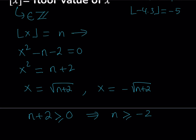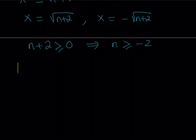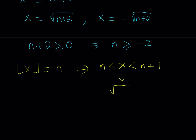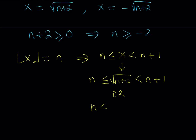This assumption gives us a useful inequality. If the floor value of x equals n, then x is between n and n plus 1. So we can replace x with square root of n plus 2 or its negative, giving us two inequalities: n ≤ √(n+2) < n+1, or the same with negative √(n+2). There's an "or" because it depends on whether x is positive or negative.